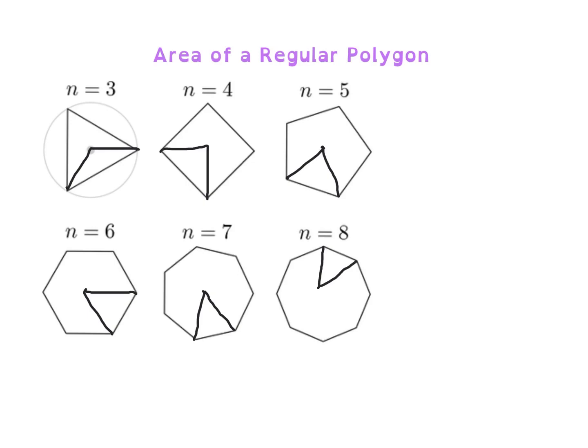I'm just showing you one of the triangles that you can create. If I'm looking at the equilateral triangle, that would actually create three triangles on the inside. The square would create four triangles, and the pentagon would create five triangles. To find the measure of one of these angles, you would take 360 degrees and divide by the number of sides.